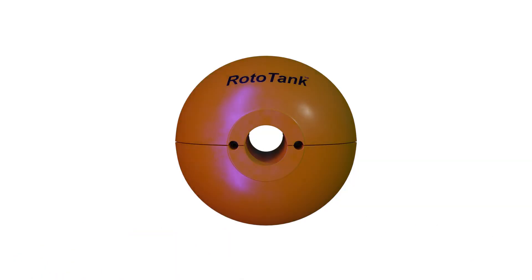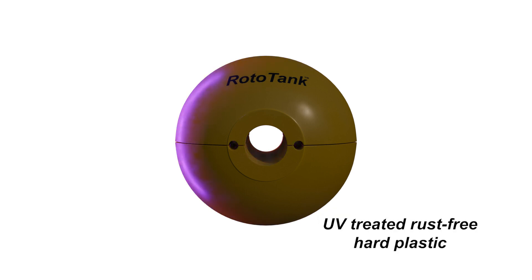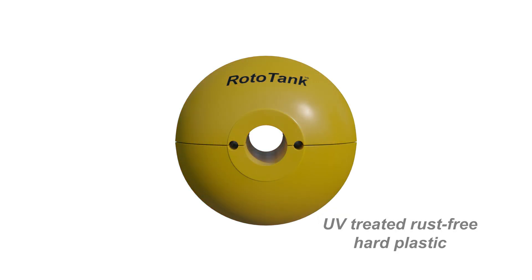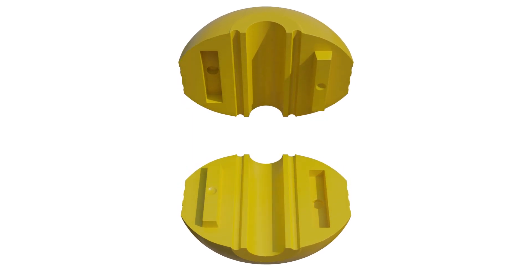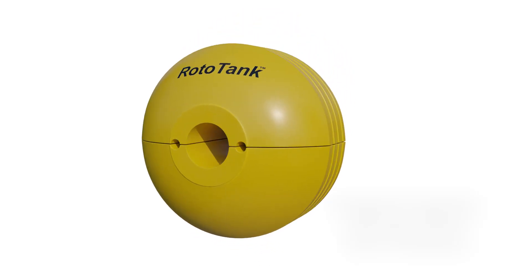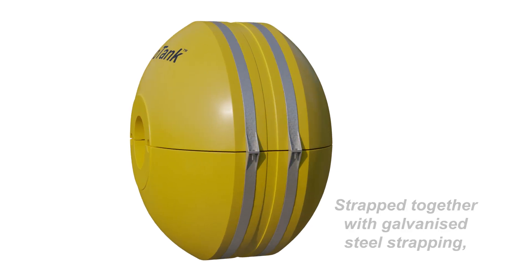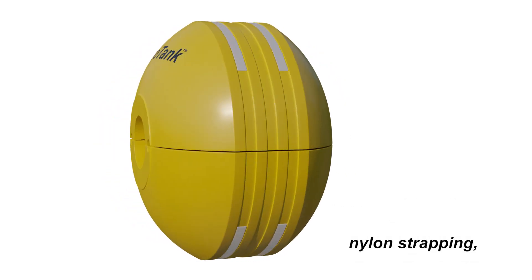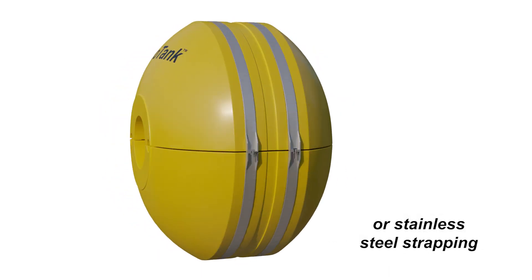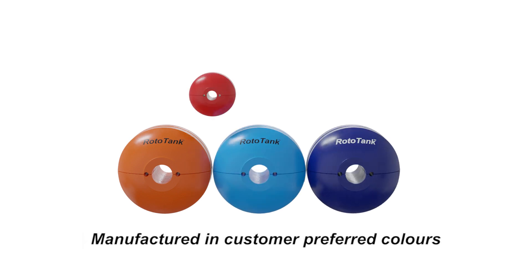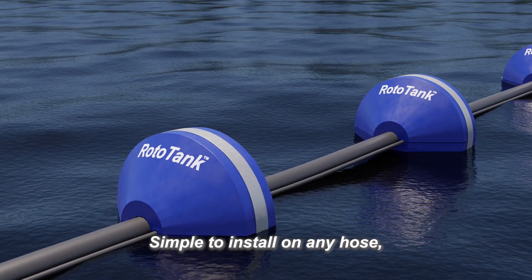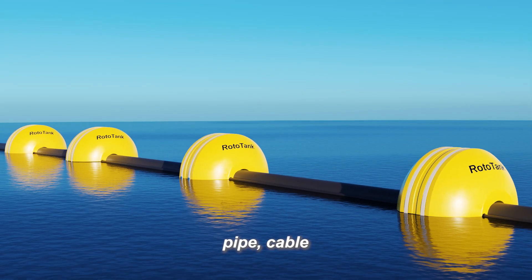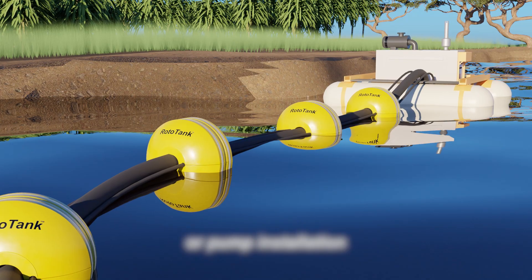On the other hand, Rototank pipe floats are made from UV-treated, roto-moulded, rust-free hard plastic. They consist of two halves with locating slots that keep them from separating, and are easily strapped together using galvanized steel strapping, nylon strapping, or stainless steel strapping. Rototank pipe floats are manufactured in customer-preferred colours and are simple to install on any hose, pipe, cable, or pump installation.